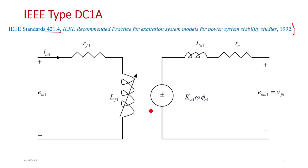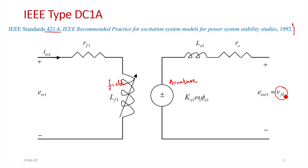A DC exciter may be a self-excited DC generator or a separately excited generator. Here we'll consider a separately excited DC generator. We can see the armature of the DC generator and the field winding. The output voltage produced in the armature circuit is fed to the field winding of the main generator as v_fd. So e_out1, the output of the armature circuit of the DC generator, is equal to v_fd.